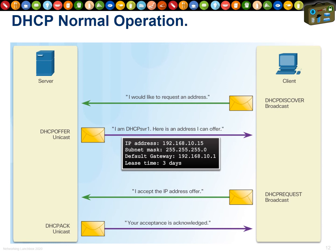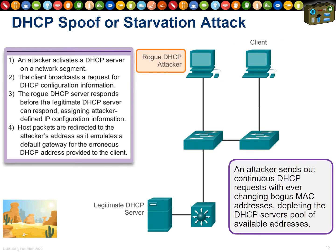DHCP is wonderful — a PC wakes up, requests an IP address, the server offers one, the client requests it, the server acknowledges. It's essential for large networks: manually setting static IPs for 20,000 computers would take forever. But unfortunately DHCP has no built-in security, so there are two very common attacks. The first is a rogue DHCP server — someone brings a home router into the office, plugging it in creates a second DHCP server that legitimate clients may talk to instead of the real one.